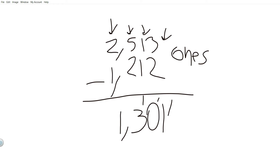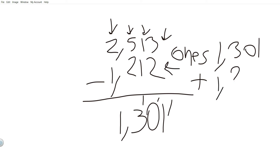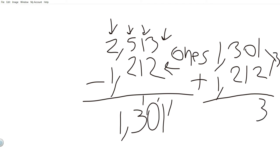I can check my answer by adding. One thousand three hundred one plus one thousand two hundred twelve — I'll start from the ones column. One plus two is three, zero plus one is one, three plus two is five, and one plus one is two.